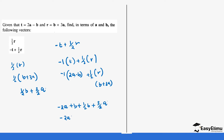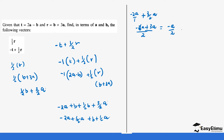We put the like terms together: negative 2a plus 3a plus 3/2a for the a terms. For the a terms: negative 2a over 1 plus 3/2a, so the LCM is 2. This becomes: 2 divided by 2 times negative 2a gives negative 4a over 2, plus 3a over 2, which gives negative 4 plus 3 = negative 1, so we get negative a over 2, which is negative ½a.